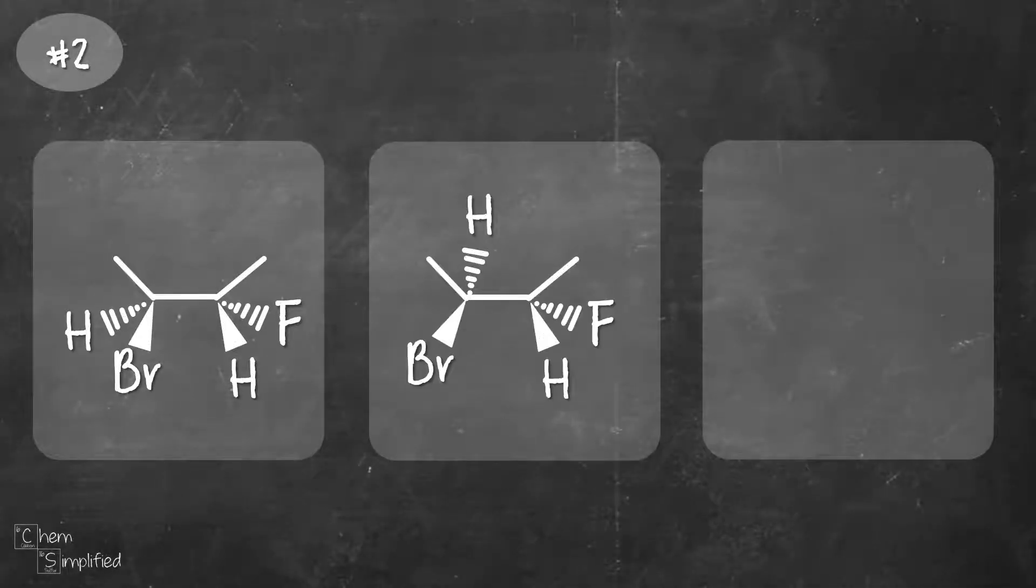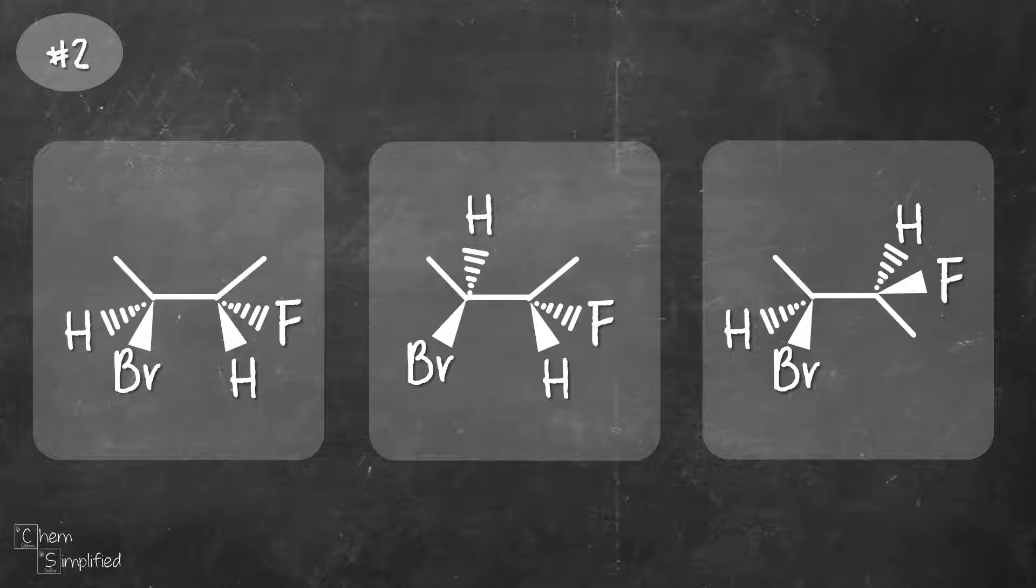Here's our next example 2s3s2 bromo3 fluorobutane. Looks like we have two stereocenters. The first one is drawn correctly. Each of the carbon is tetrahedral. They each have two solid lines right next to each other and two wedges right next to each other.